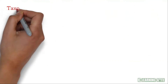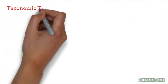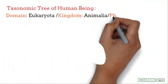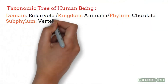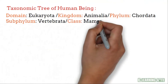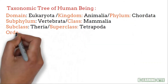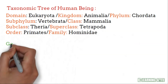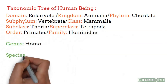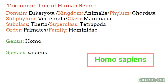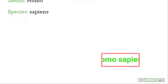Let us have another example using humans. Our genus is Homo and species is sapiens, so our biological name is Homo sapiens.